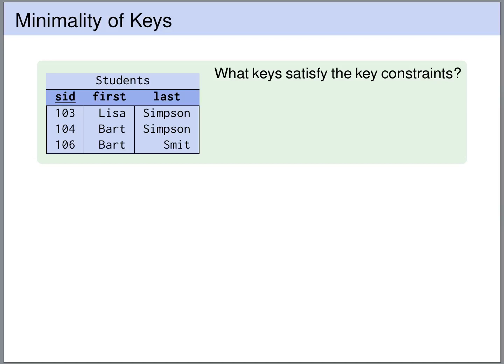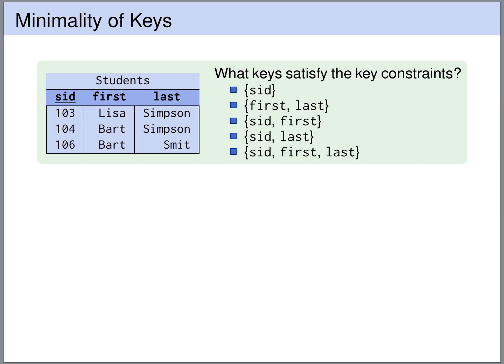Let's look at a simplified students table and ask: what sets of attributes satisfy the key constraint? SID satisfies it — it uniquely identifies each row. First name alone does not satisfy it; we have two rows with the same first name. Last name alone also does not. But combining first and last satisfies the constraint — no two rows agree on both attributes simultaneously. Combining SID with first, SID with last, or SID, first, and last also all satisfy the key constraint.